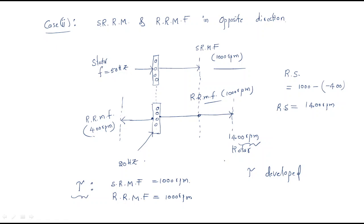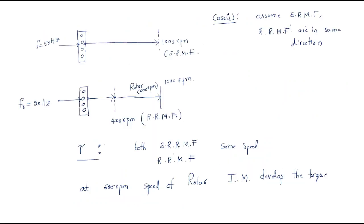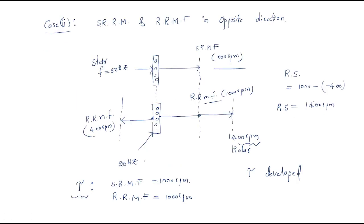To summarize: if stator RMF and rotor RMF are in the same direction, the relative speed is 1000 - 400 = 600 rpm, so the rotor must rotate at 600 rpm. If they are in opposite directions, the required speed is 1000 + 400 = 1400 rpm, so the rotor must rotate at 1400 rpm.